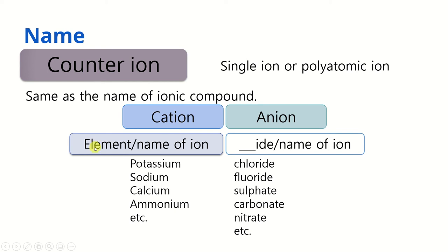The counter ion can be a single ion — either positive or negative — or it can be a polyatomic ion, which is a group of atoms with a charge. We name the counter ion the same way we name ions for ionic compounds. If the counter ion is a cation, we just give the name by using the element name or the name of the group of ions — for example, potassium ion, sodium ion, calcium ion, or a polyatomic positive ion like ammonium (NH₄⁺). If the counter ion is an anion, we change the ending of the element name to -ide, like chloride, fluoride, iodide, or we give the name of the group of ions such as sulfate, carbonate, nitrate, etc.